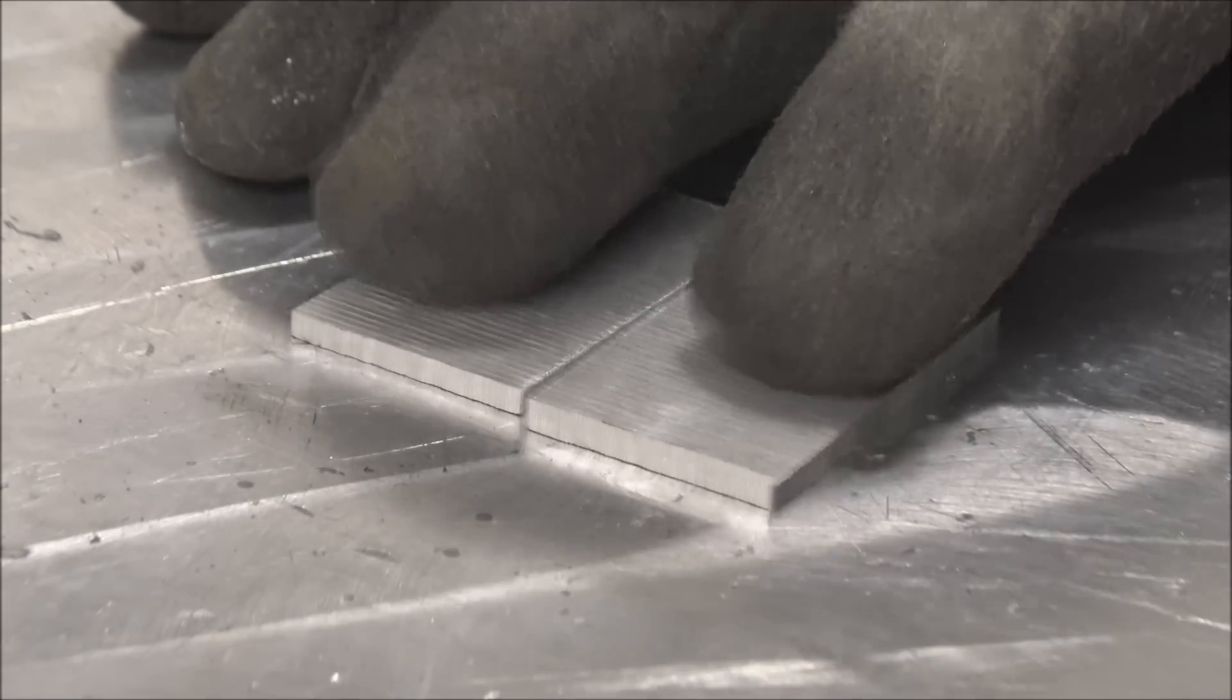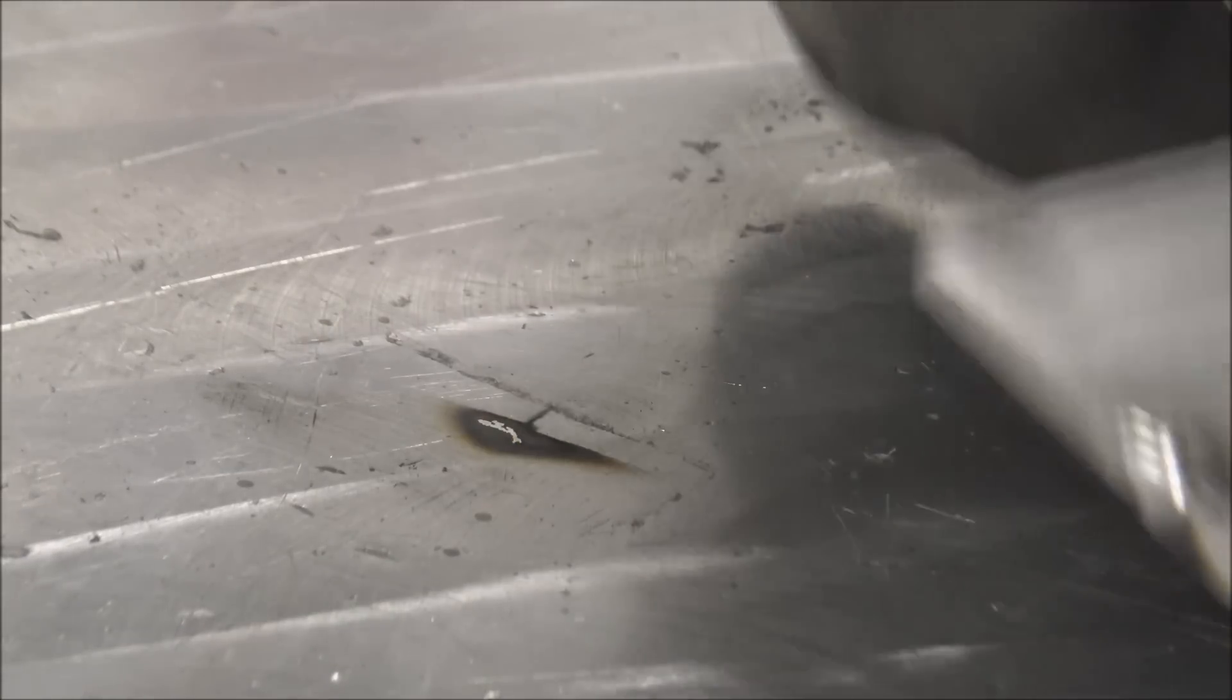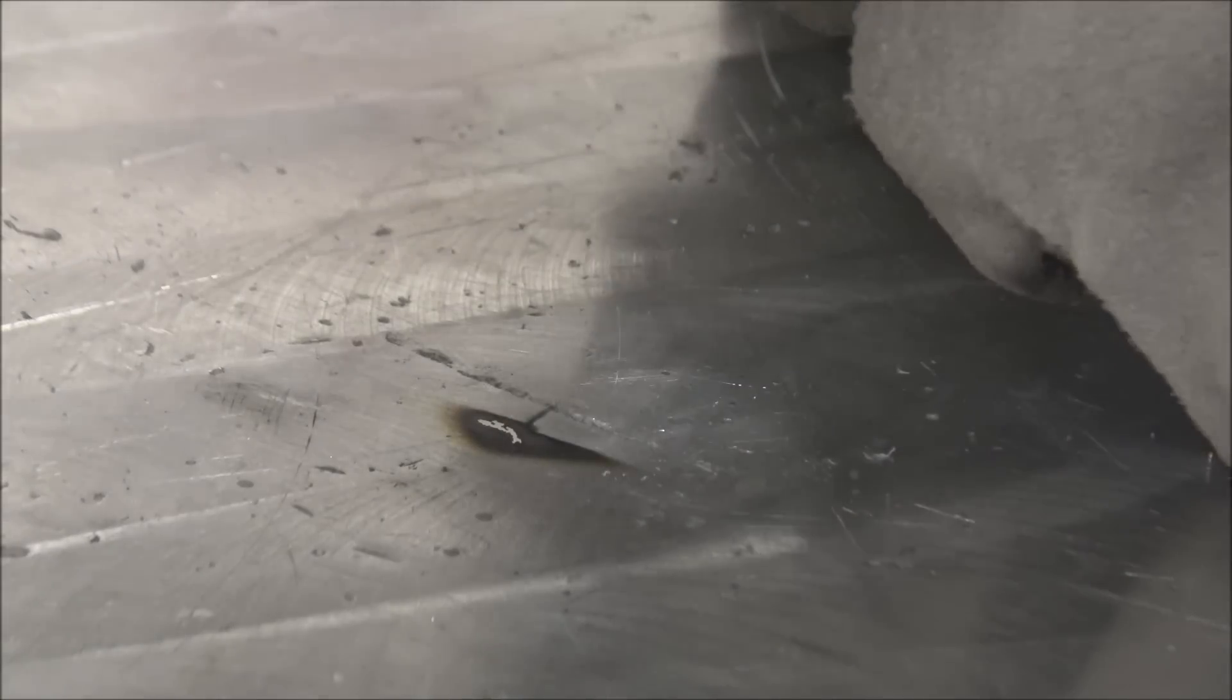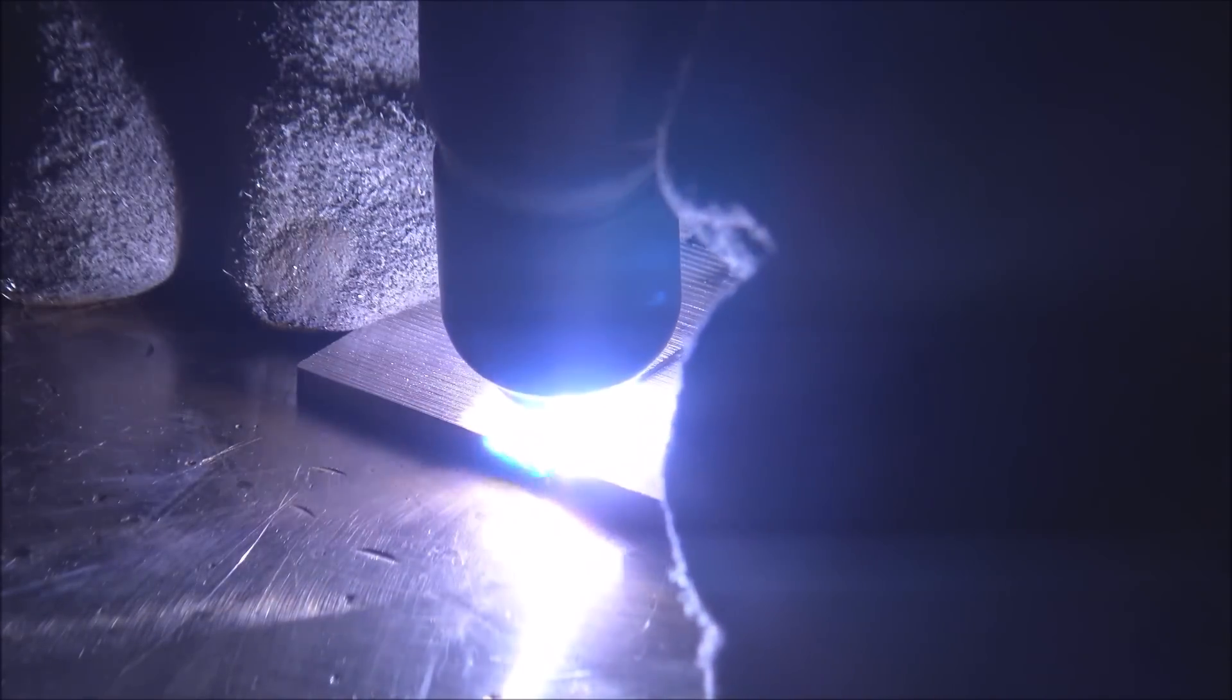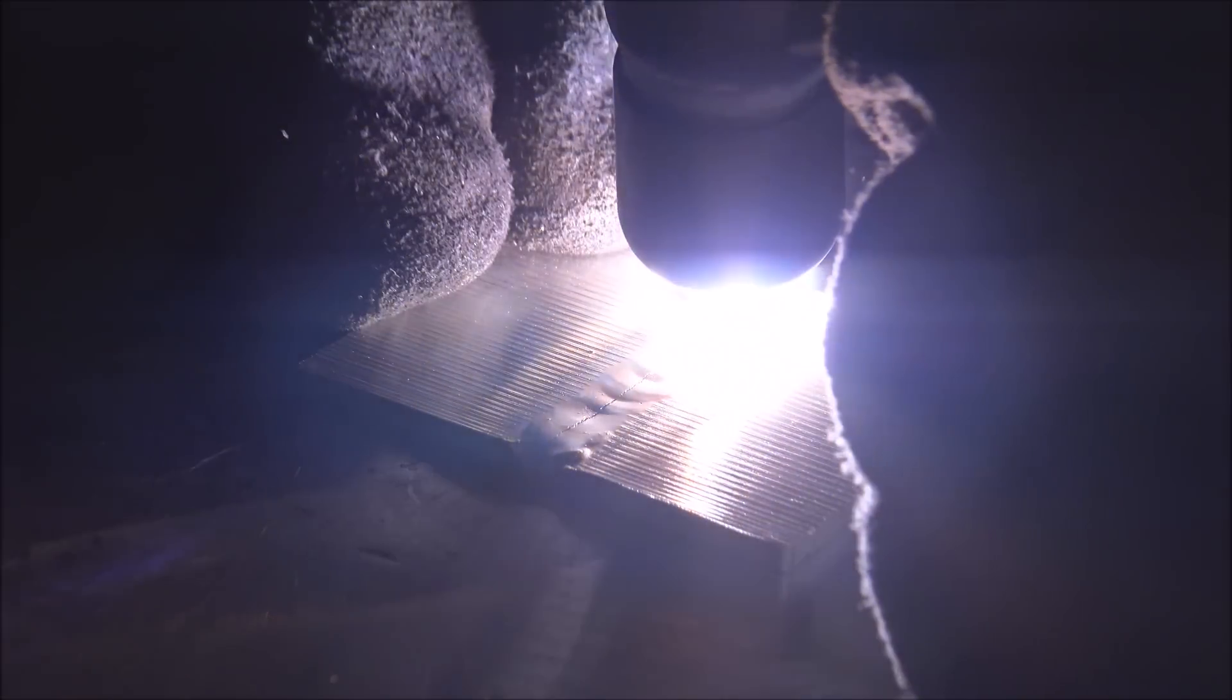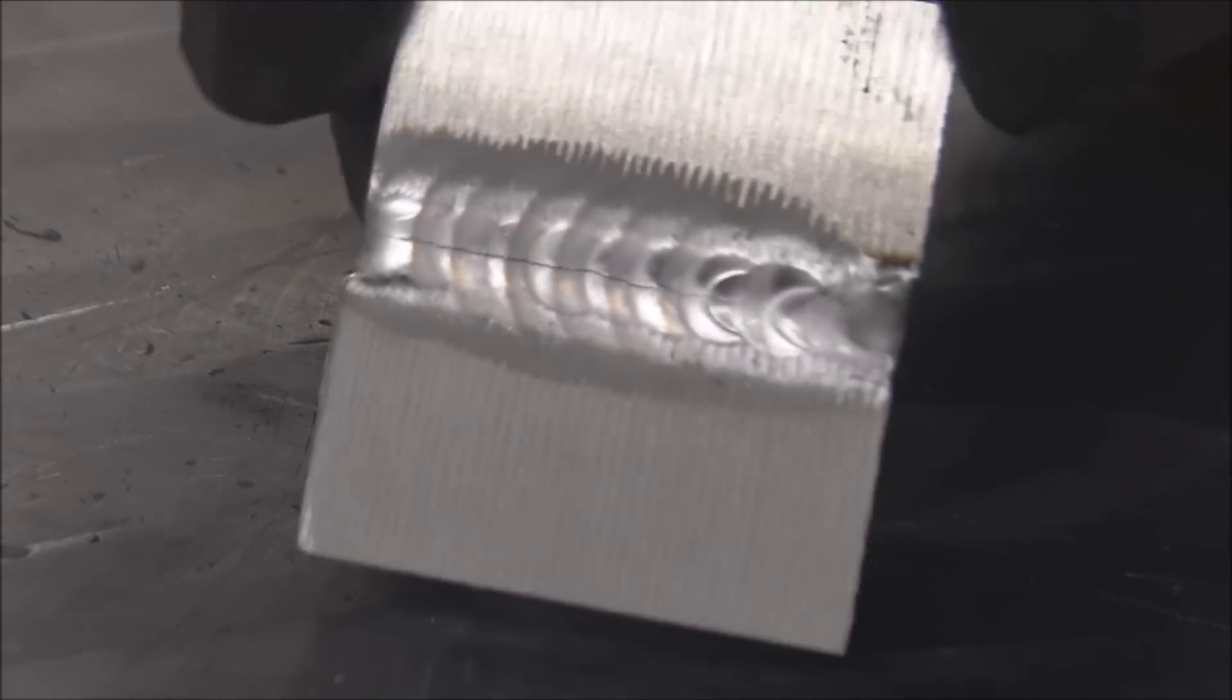Okay, first test, simple butt weld with no filler rod. Let's see how bad this cracks. Tack weld's holding fairly strong. Split right down the center just like 6061 does.